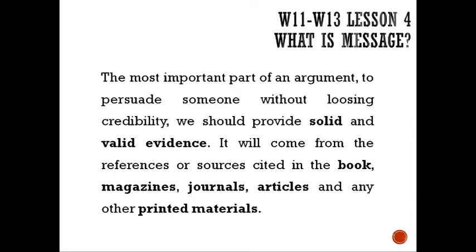Evidence should come from references or sources cited in books, magazines, journals, articles, and other printed materials. We have two types of sources: primary sources and secondary sources. Primary sources are mostly persons who experienced something first-hand — for example, when talking about martial law, we get evidence from people who lived during that era. Secondary sources include books, magazines, and journals.